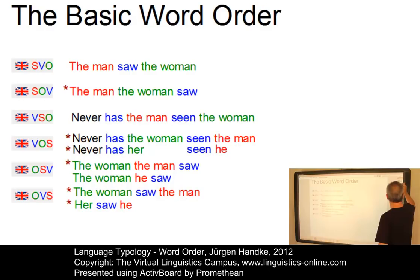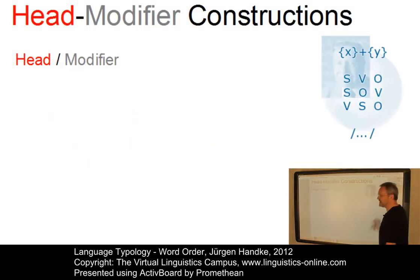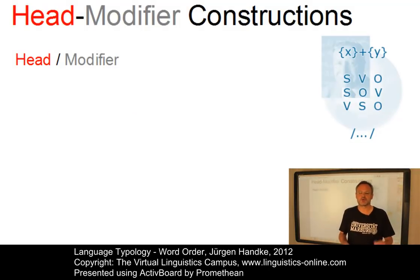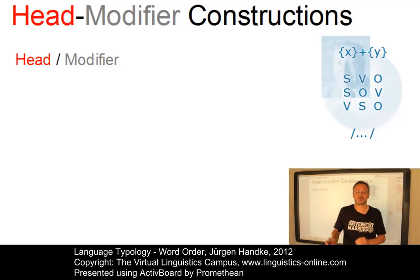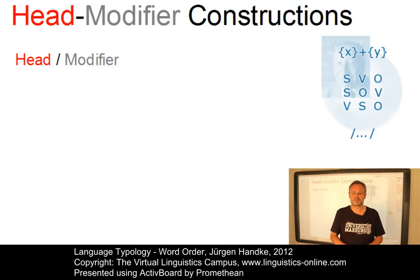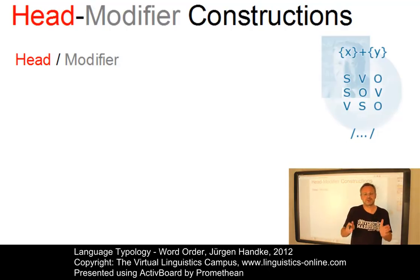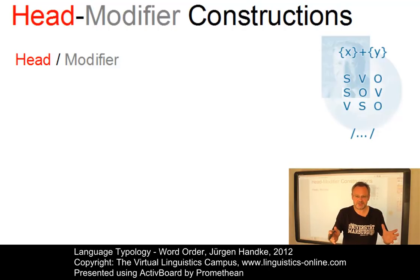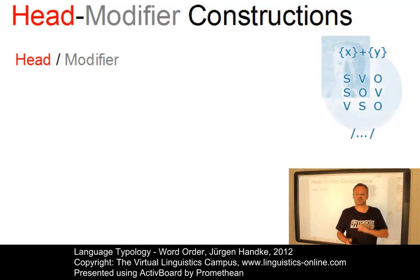Over and above the basic word order patterns, there are a number of so-called head-modifier constructions whose internal ordering is highly revealing with regard to the basic configuration of a language. The typologist Joseph Greenberg found out in the middle of the 20th century that there are typical correlations between the order of the basic functional elements — subject, verb, object — and these head-modifier patterns. So let's look at such head-modifier relationships in more detail.